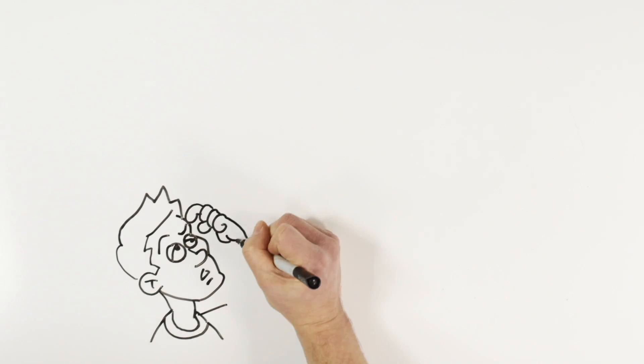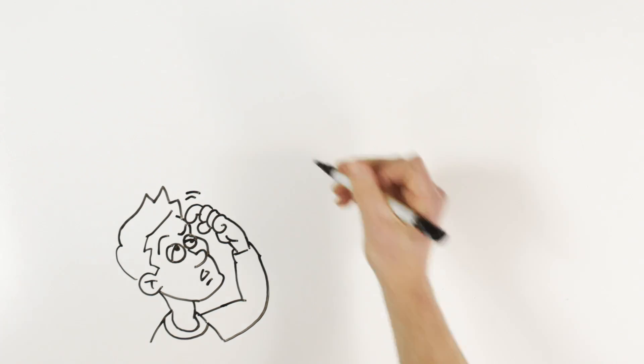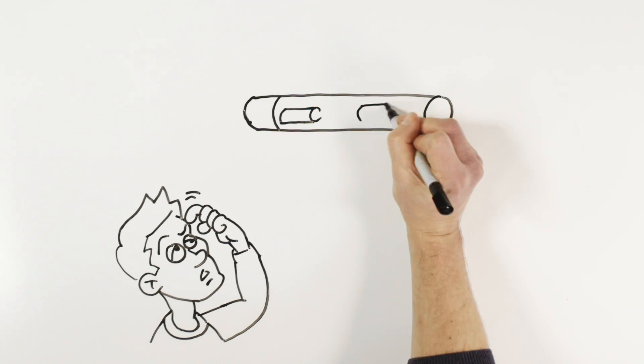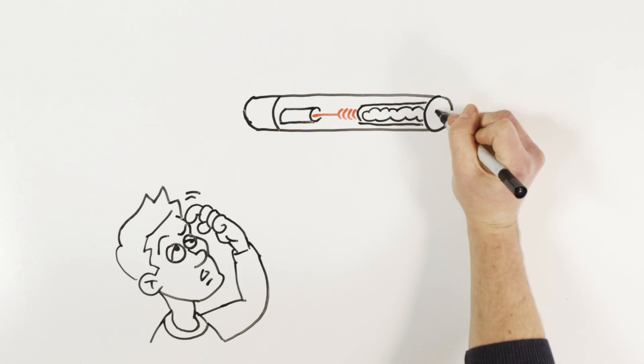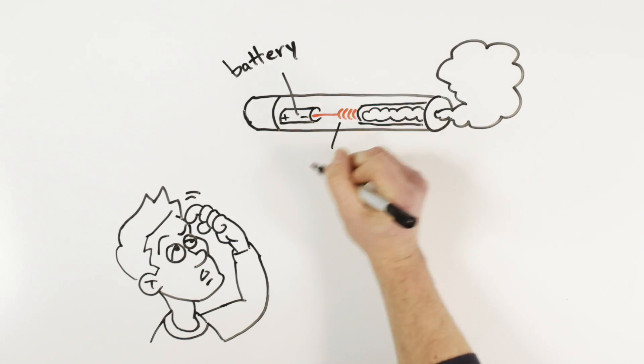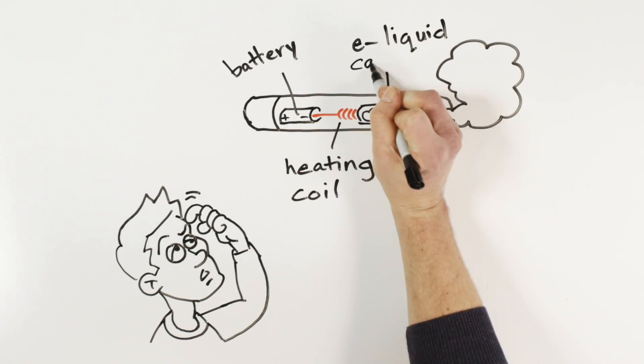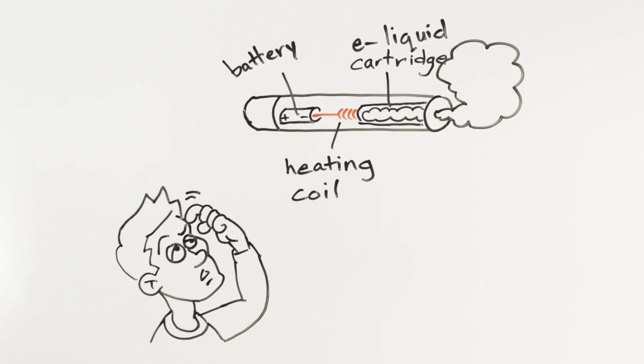How do e-cigarettes compare to regular cigarettes? The World Health Organization defines them as battery-powered devices that are used to heat and aerosolize a solution containing propylene glycol, vegetable glycerin, flavorings, and sometimes nicotine.